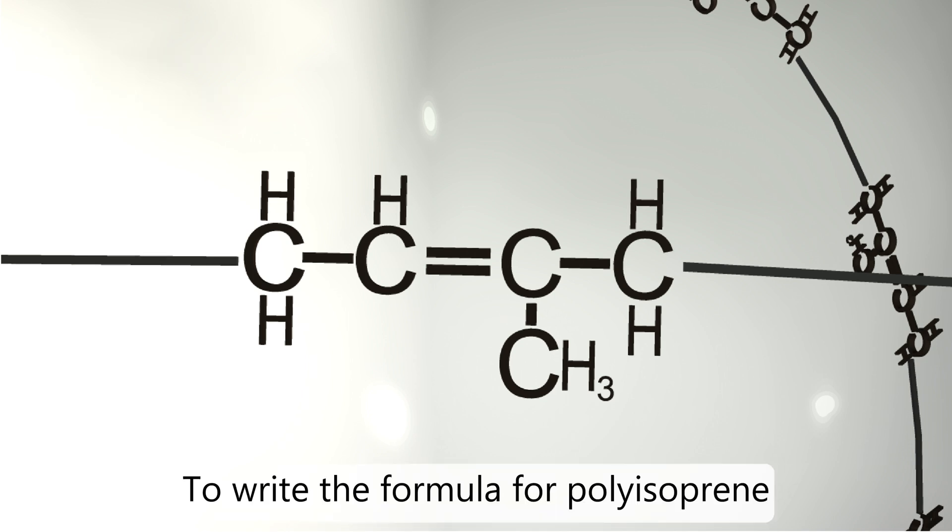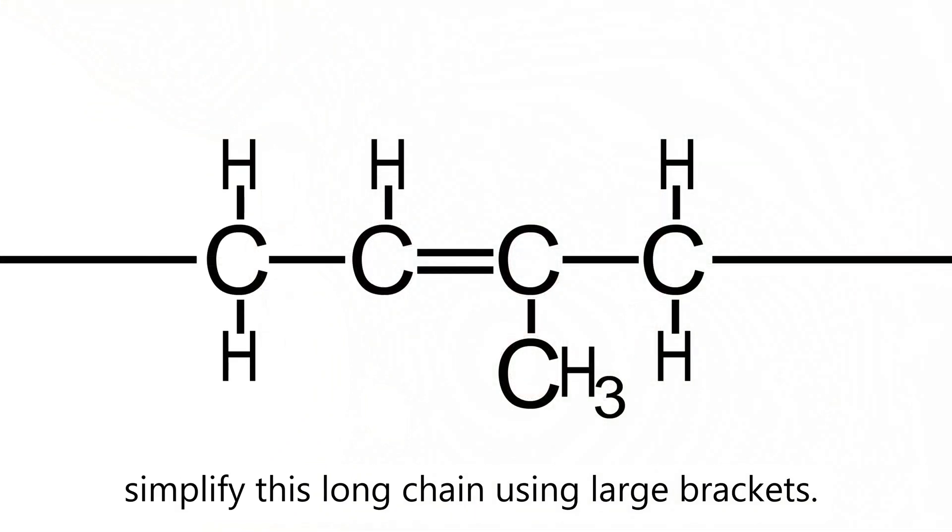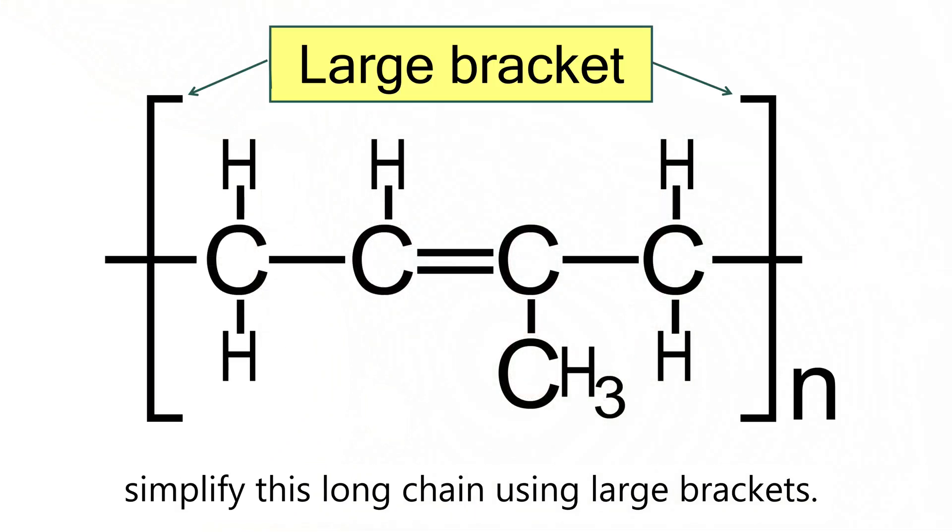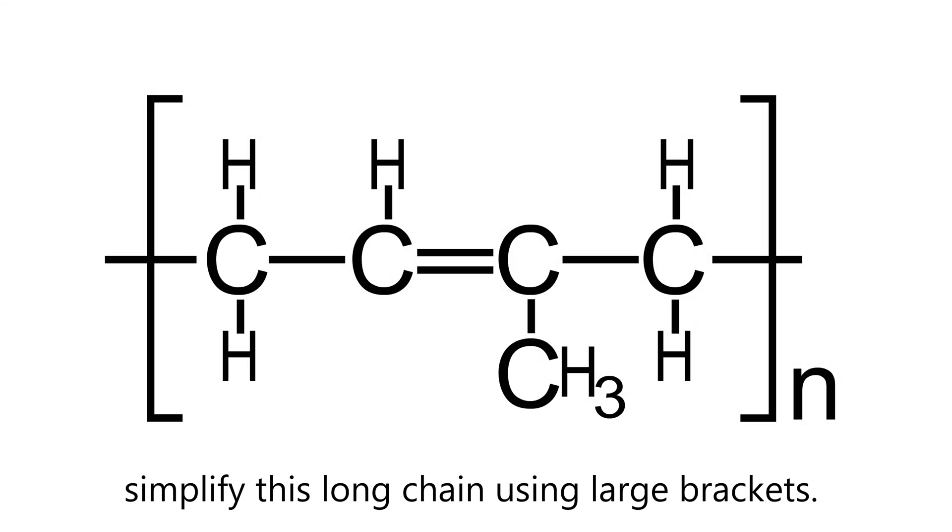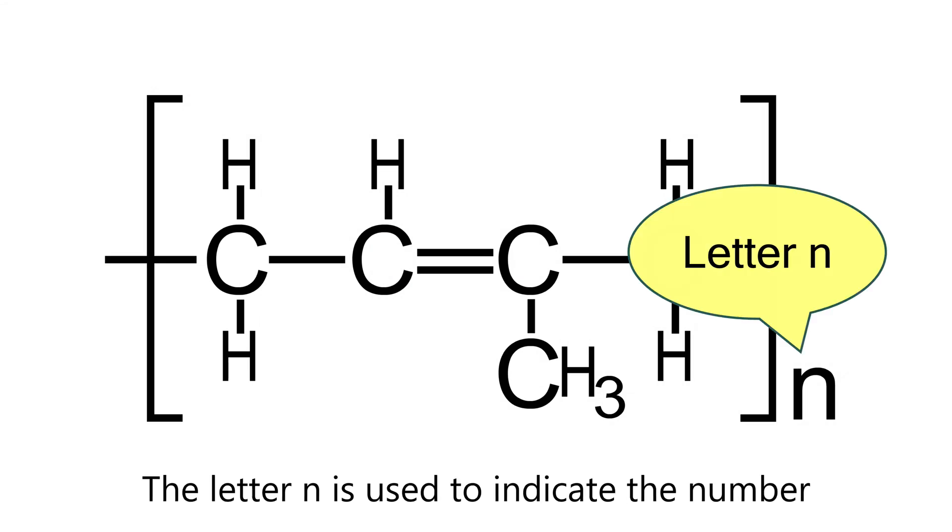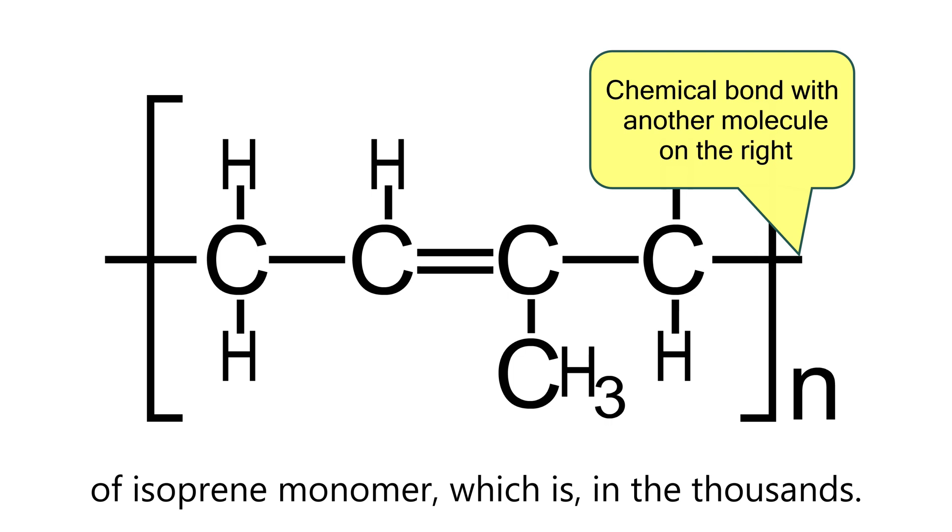To write the formula for polyisoprene, simplify this long chain using large brackets. The letter N is used to indicate the number of isoprene monomers, which is in the thousands.